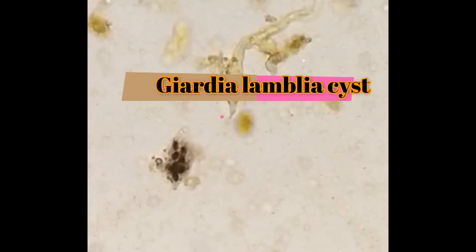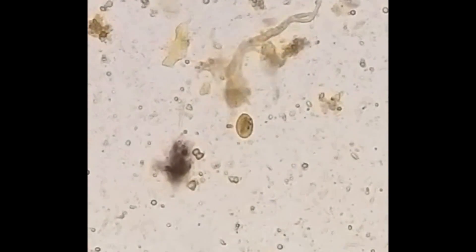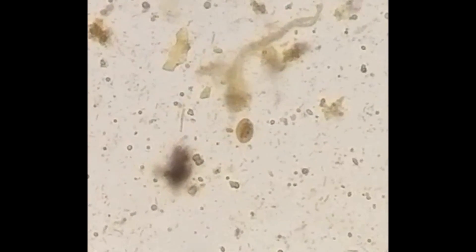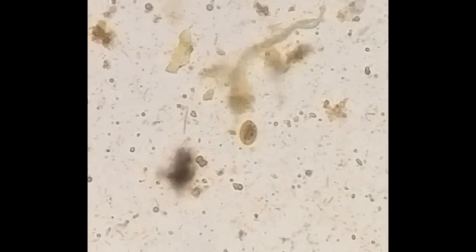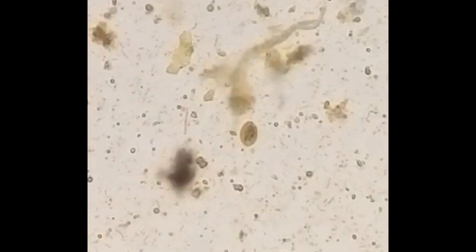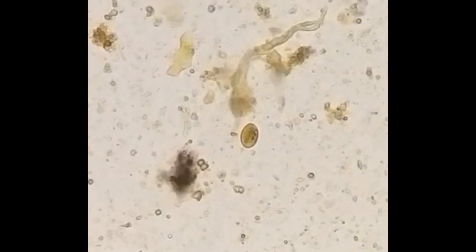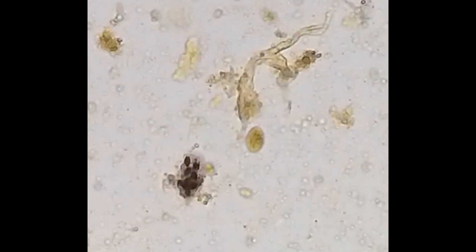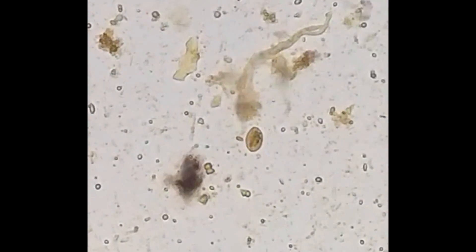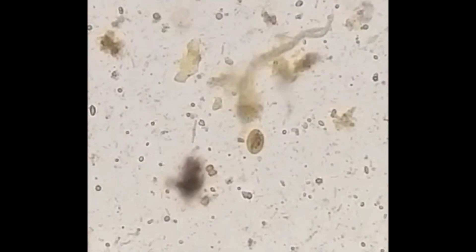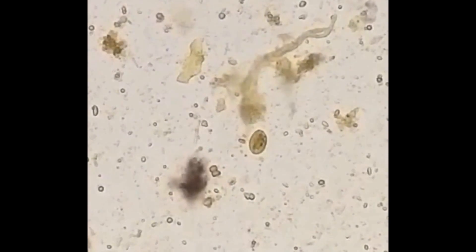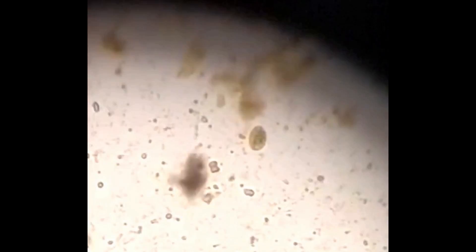Here you can see a Giardia lamblia cyst. In the center of the cyst you can see hair-like lines folded in a 2-S shape. The cytoplasm is clear pale yellowish color. It has 2 to 4 oval nuclei. The cyst has an oval shape and size is 8 to 12 micrometers.